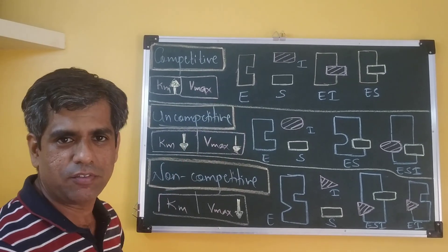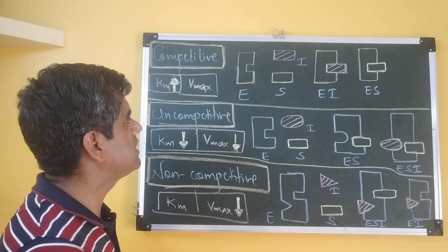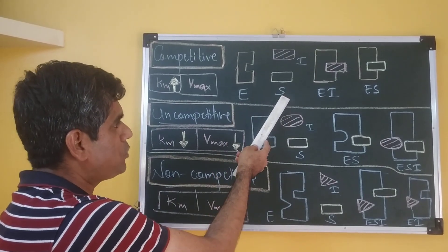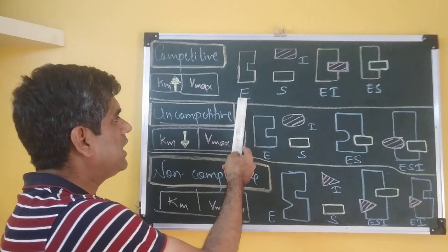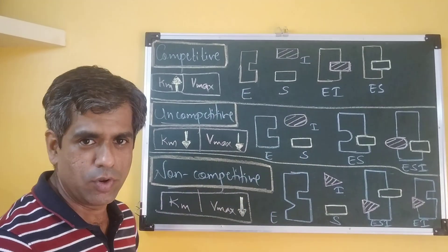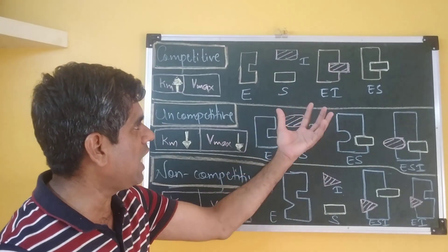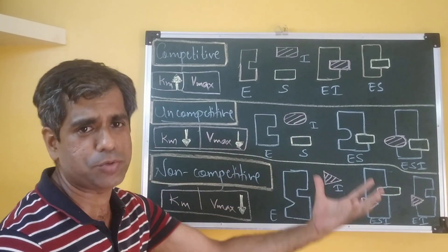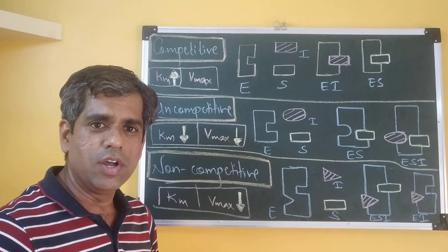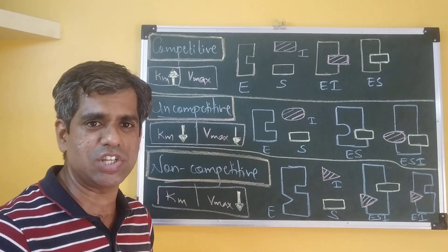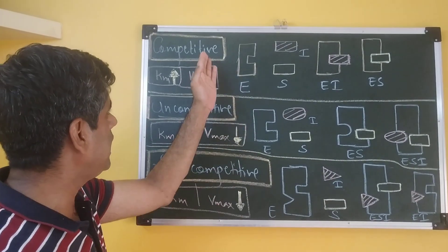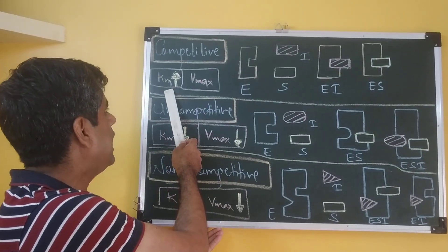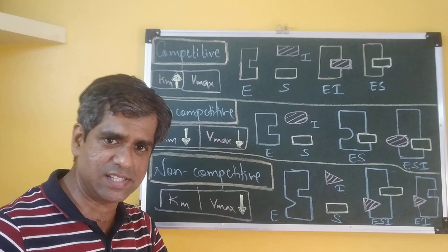If we talk about a typical competitive inhibitor, the characteristic feature is that it mimics the structure of the substrate, and therefore it binds at the active site. So the enzyme can either bind the substrate to form an ES complex, or it can bind the inhibitor to form the EI complex. You will never find an ESI complex. Since the inhibitor and substrate look similar, the enzyme gets confused, and therefore its affinity towards the substrate decreases in the presence of the inhibitor. There is an inverse relationship between Km and affinity, so affinity decreases and Km increases.